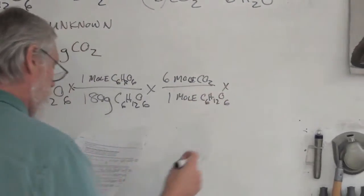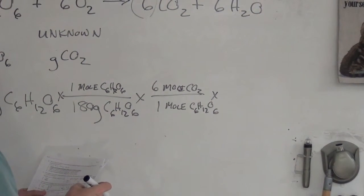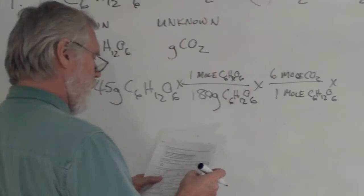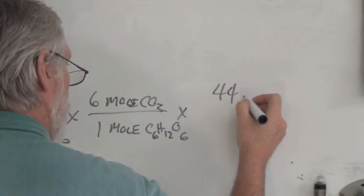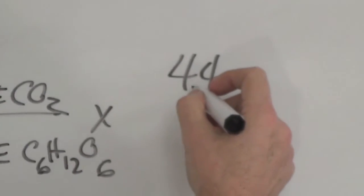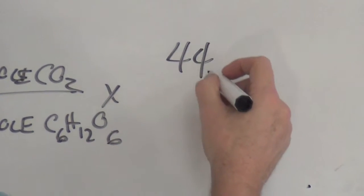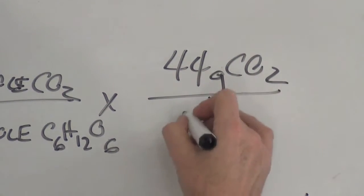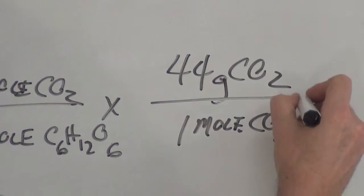And then we got one more to go through. And that is where we get rid of the moles of CO2 and we get to grams of CO2. So we know there are 44. That's 12 and 2 times 16 is 32. Comes out to 44 grams of CO2 in one mole of CO2. I'm hoping this is making sense.